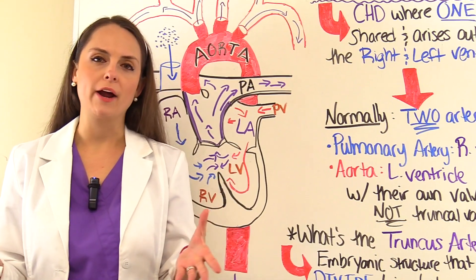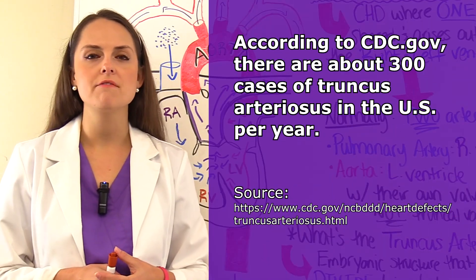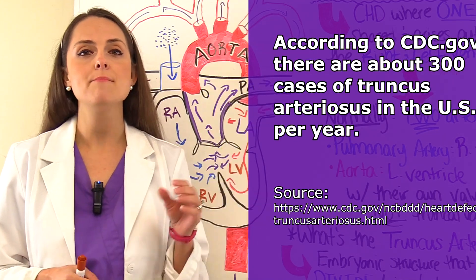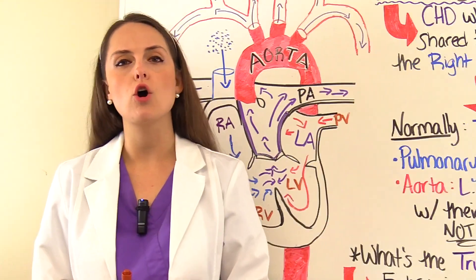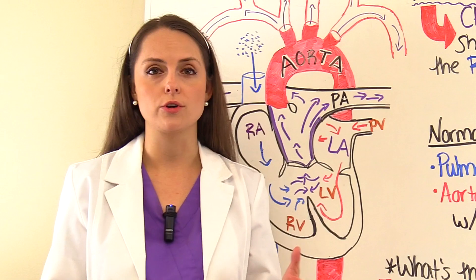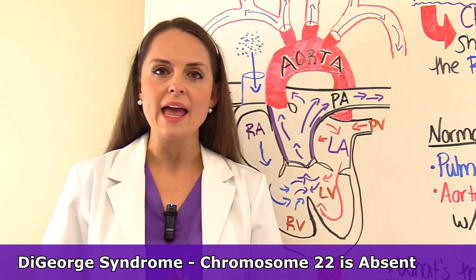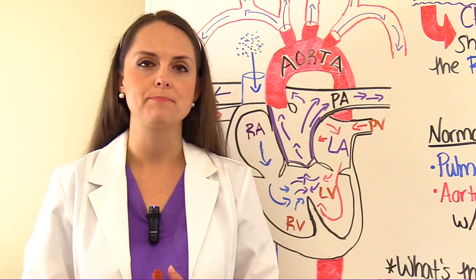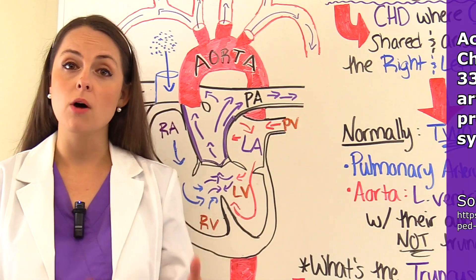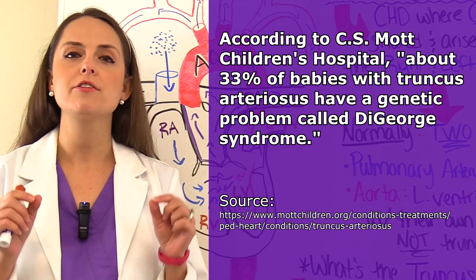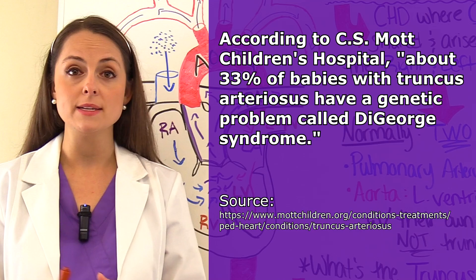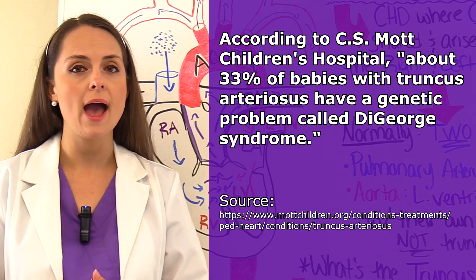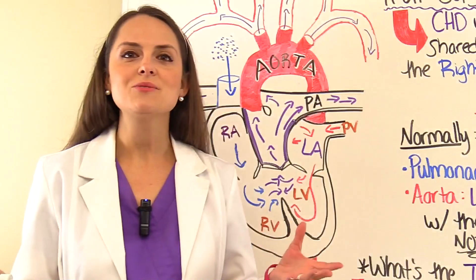This is a relatively rare condition. According to the CDC, there are about 300 cases per year in the U.S. Most cases are associated with a genetic disorder called DiGeorge syndrome, where chromosome 22 is missing. According to C.S. Mott's Children's Hospital, about 33% of babies with truncus arteriosus have DiGeorge syndrome.